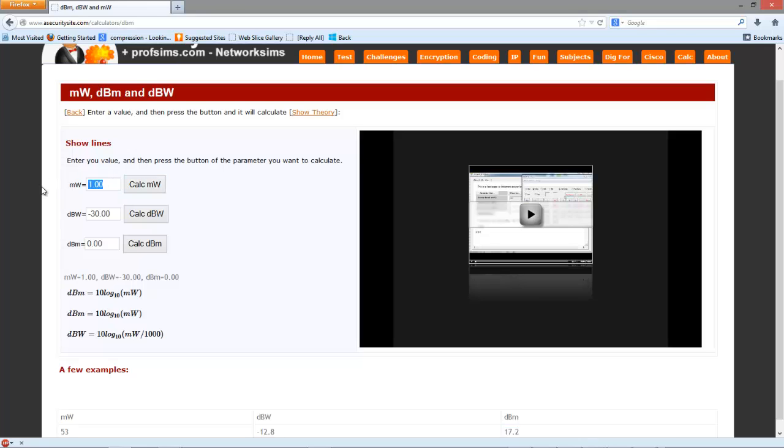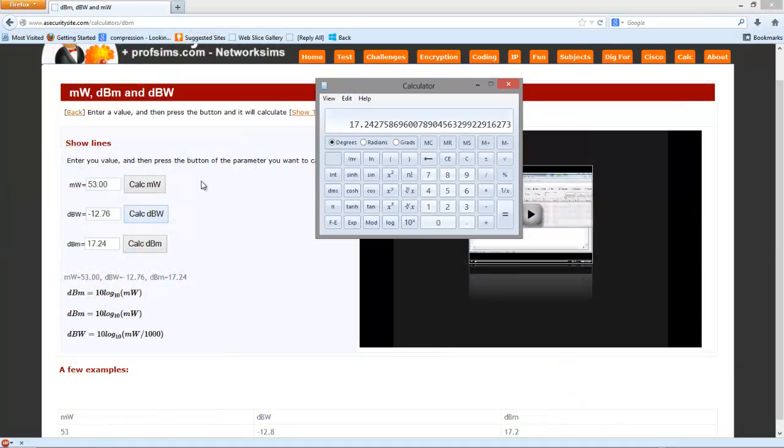So hopefully if we try this here, 53, we calculate our dBm. Then we get 17.24. And then we get minus 12.76. We can prove that in terms of our dBW.